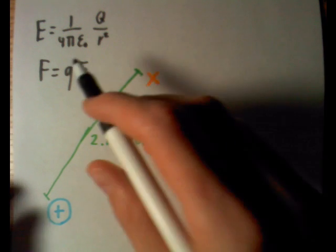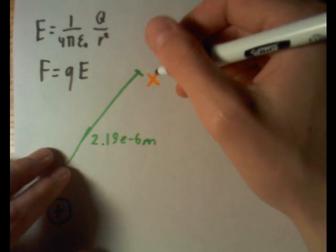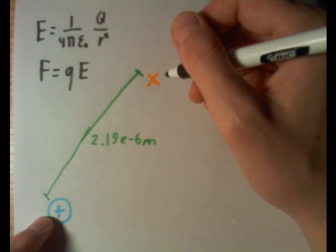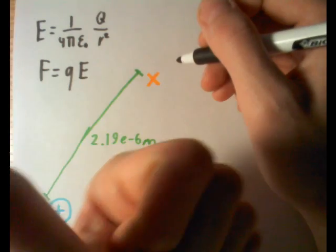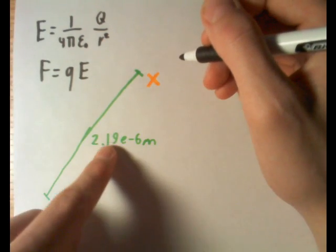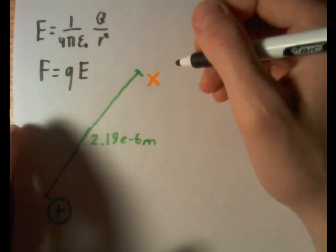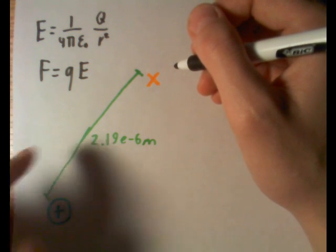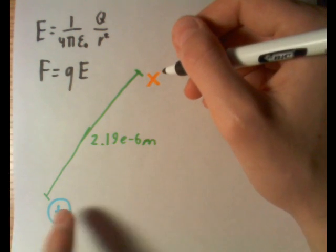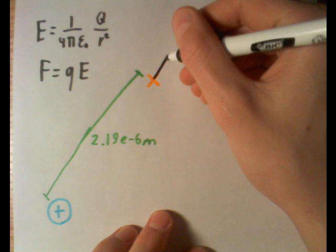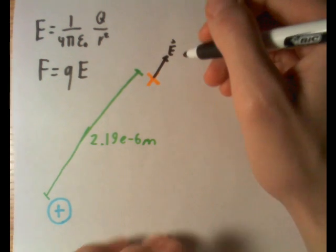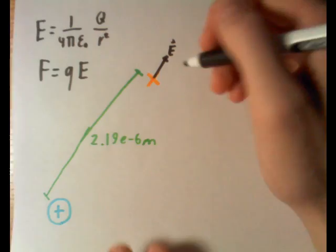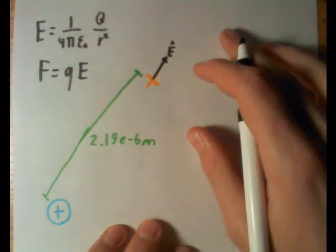So first we have to find the electric field at this point due to this proton. We know it's a proton, and all positive things point an electric field, while negative things pull an electric field. I shouldn't say pull an electric field because it's not emitting a force, but the electric field points towards it. So the electric field from this proton will be going this way, or away from it. Sorry, it's probably not very straight, but you get the basic idea away from it.